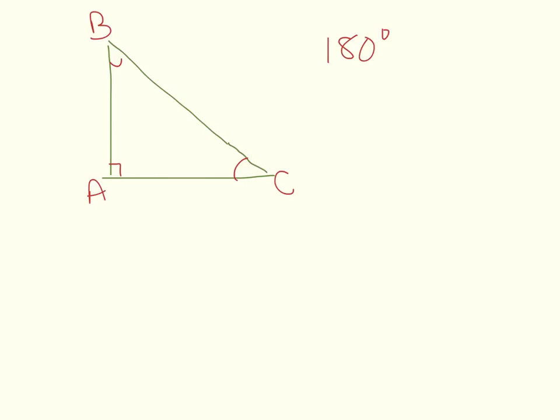Now, the way we write this, and this is a review for some, this might be new for others. When we talk about this angle right here, we refer to it by this combination, angle BAC, with the middle letter representing what angle we're talking about. So the measure of angle BAC, we're really talking about the measure of angle A, equals 90 degrees.